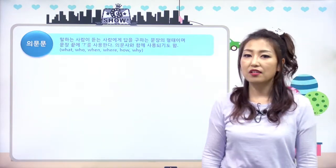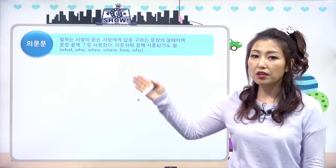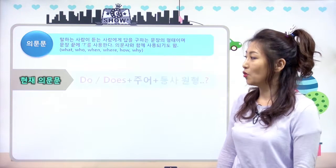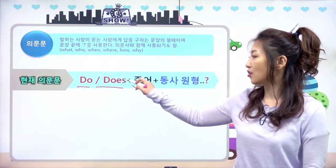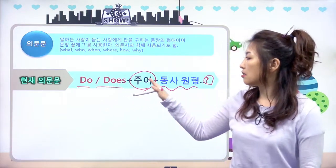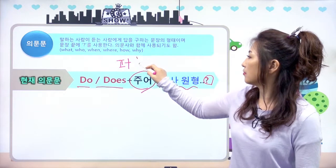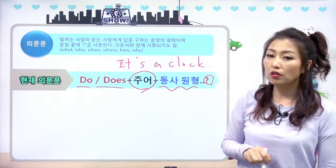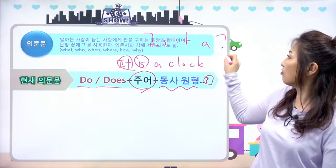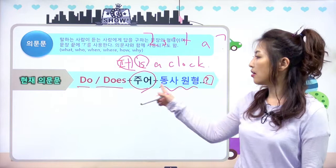이번에는 물어보는 의문문도 만들겠죠. 의문문은 question, 질문이에요. 현재 의문문은 Do, Does 다음에 주어 오고, 뒤에 동사 원형 그리고 question mark. 이렇게 사용해요. 비동사는 'It is'에서 자리를 바꿔서 'Is it a clock?' 했었잖아요. 근데 일반 동사는 자리만 바꾸는 게 아니에요. do, does의 도움을 받아야 돼요.